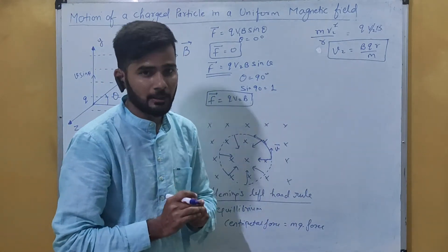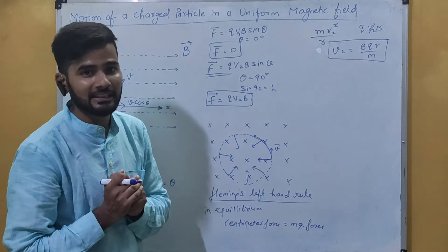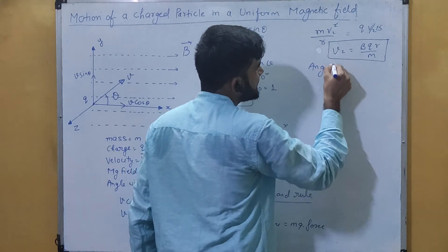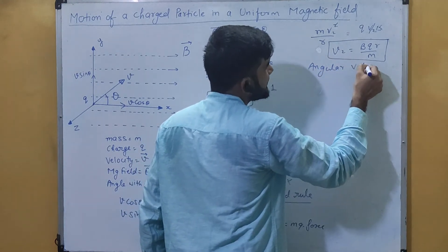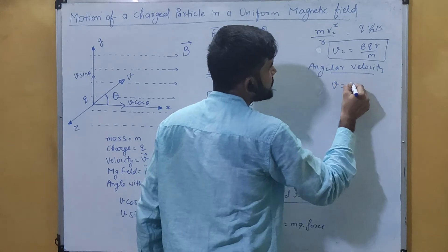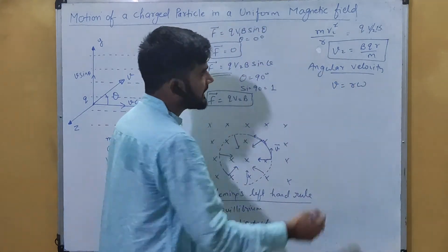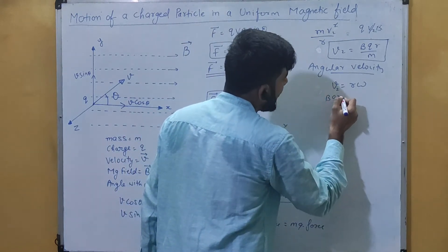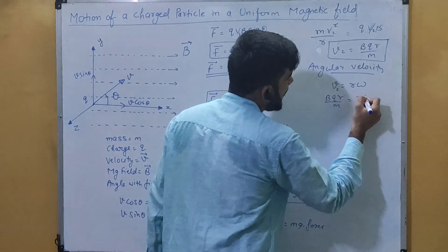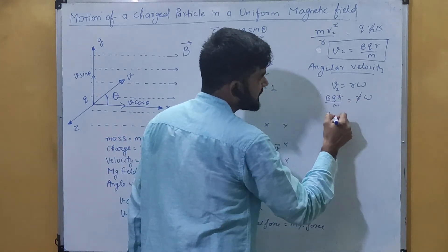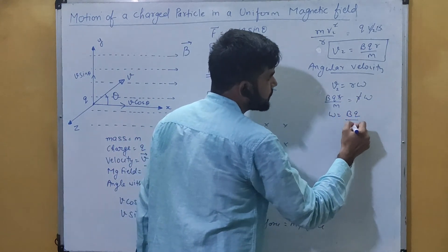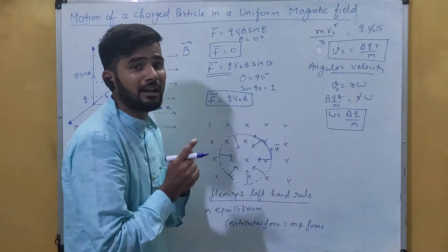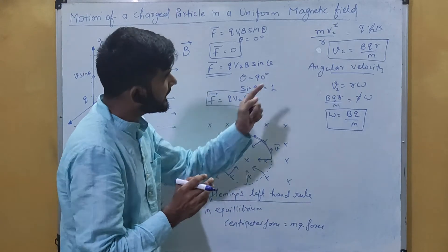To find the angular velocity, we use the formula v = r·omega. The velocity here is v2, so we put v2 = Bqr/m equal to r·omega. The r cancels on both sides, giving omega = Bq/m. This is the angular velocity of the particle moving inside the magnetic field in a circular path.